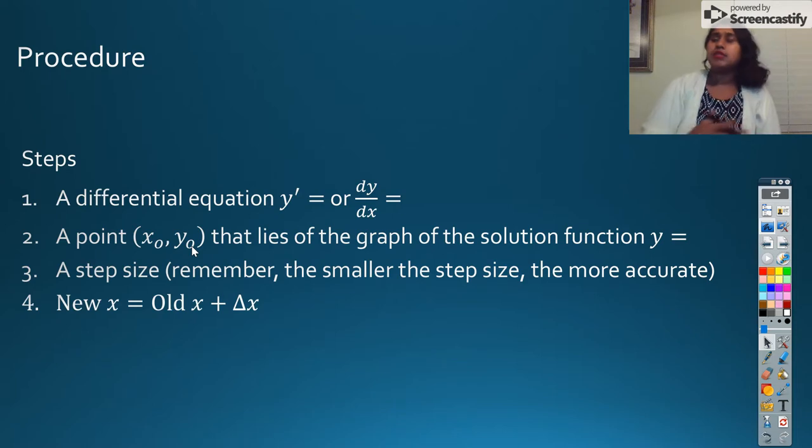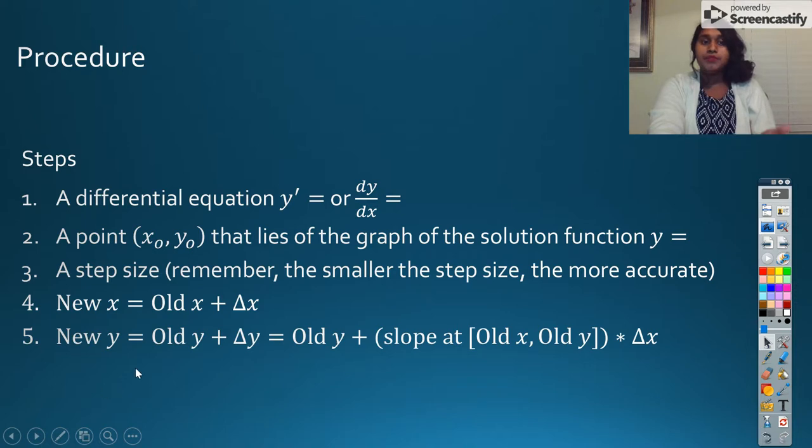And finally, we have those equations. So I went ahead and wrote it out as something more standard. My new X should be my old X plus my delta X, which is my step size. My new Y should be my old Y plus delta Y. But what do we know? Delta Y is different in the equation. So I wrote it again. My new Y is my old Y plus my slope at the old point times my step size, my delta X. So that does not change.